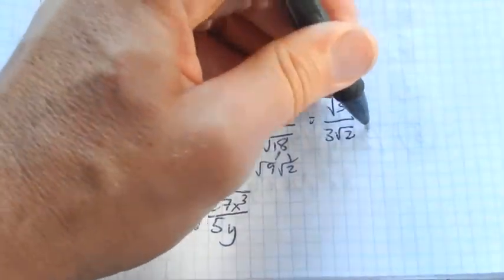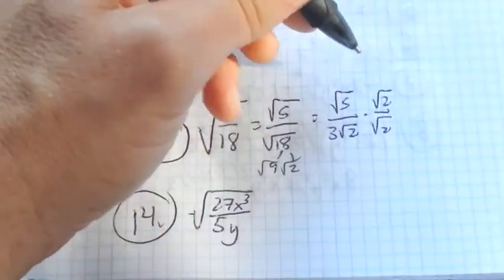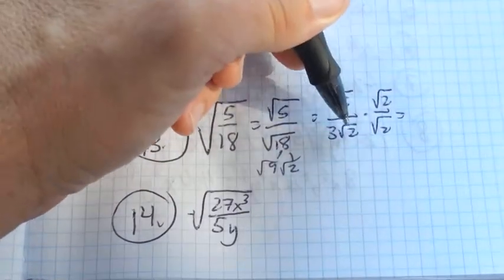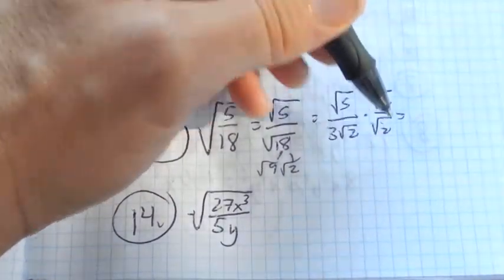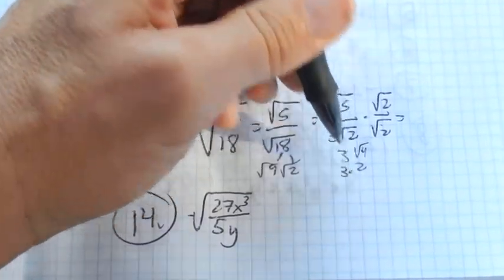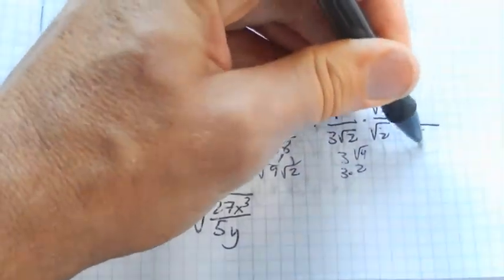What I'm going to do is multiply by 1, but 1 in this form. And notice what this does for me. Square root of 2 times square root of 2, that's square root of 4, which is 2. So in the denominator, I have 3 times 2, which is 6.